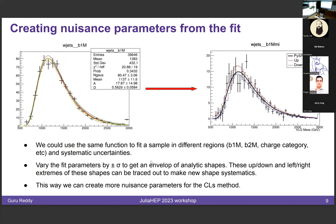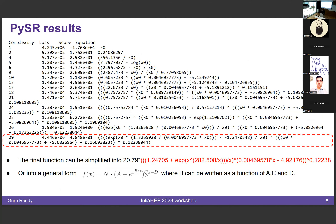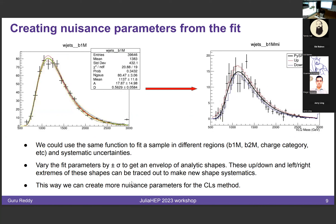Once we have the fit, we can vary the parameters by one sigma up and down, and generate nuisance parameters to feed into Higgs Combine or whatever method you're using. If you're worried that the parameters might be correlated, you can trace out envelopes — as seen in the figure on the left with the red and green lines — created by changing the parameters N, A, B, C, D by one and two sigma. You can trace out these envelopes to the right extreme, left extreme, higher extreme, and lower extreme, and call these up/down/right/left systematics to get better limits.